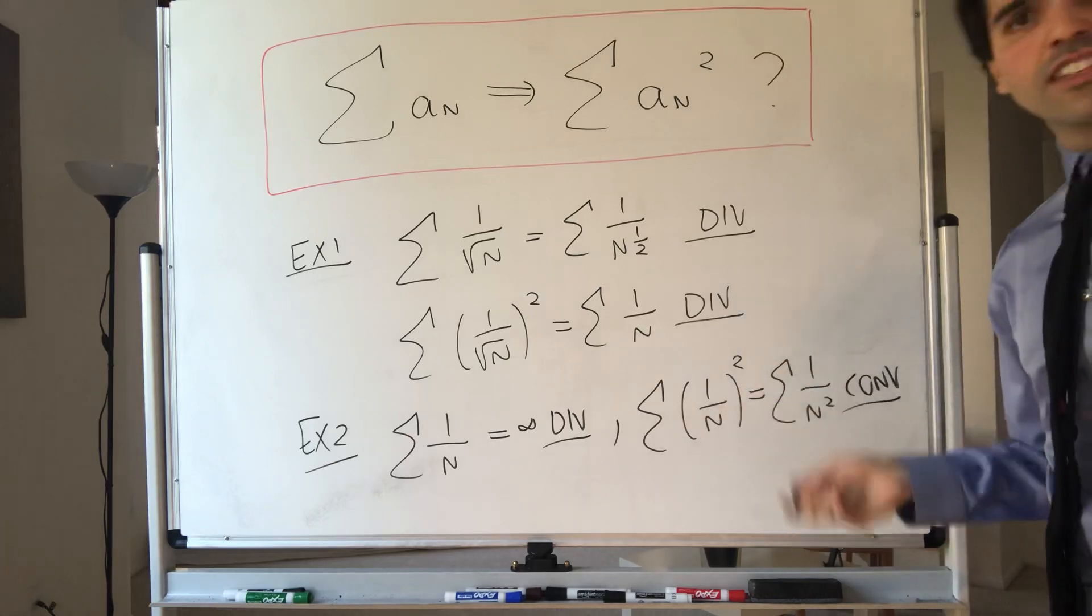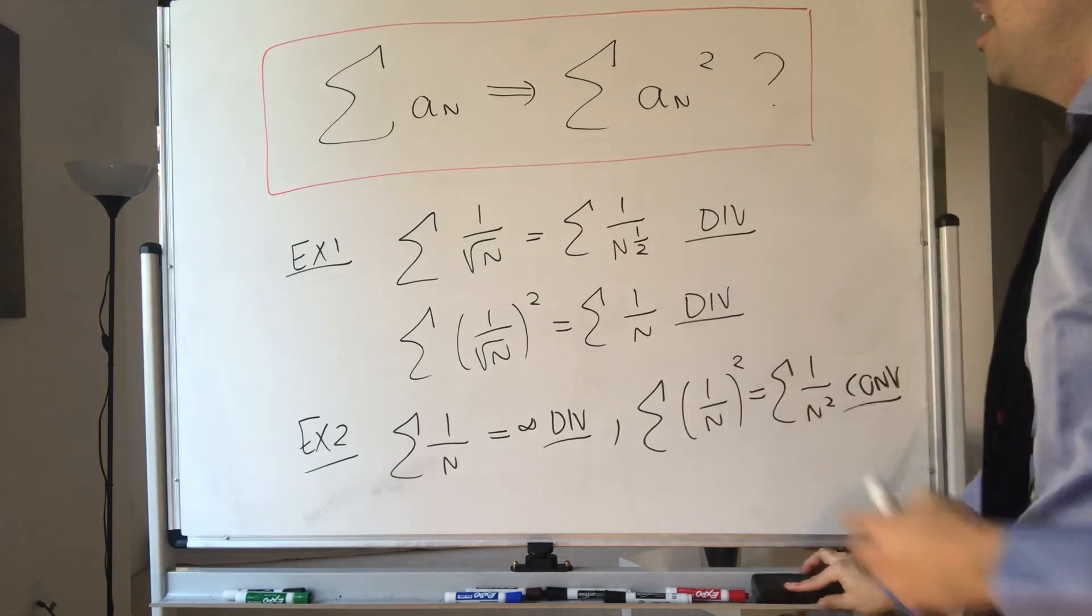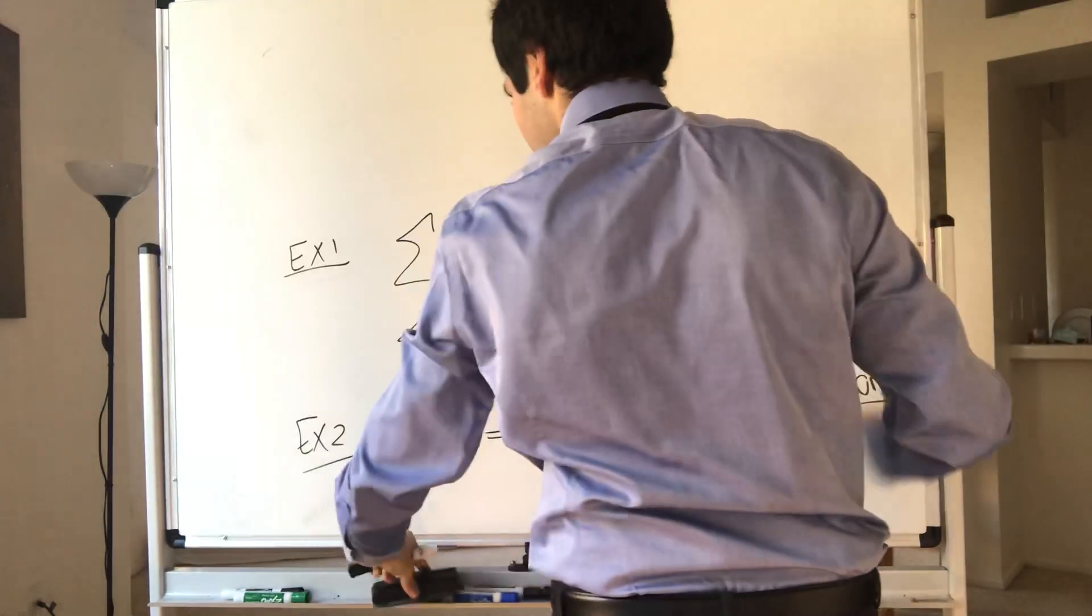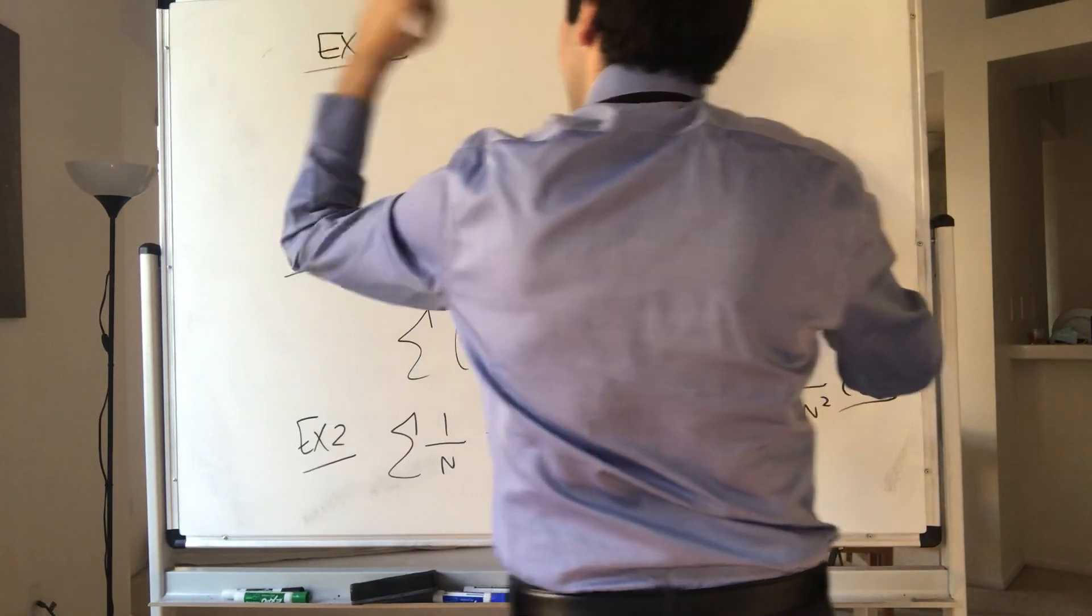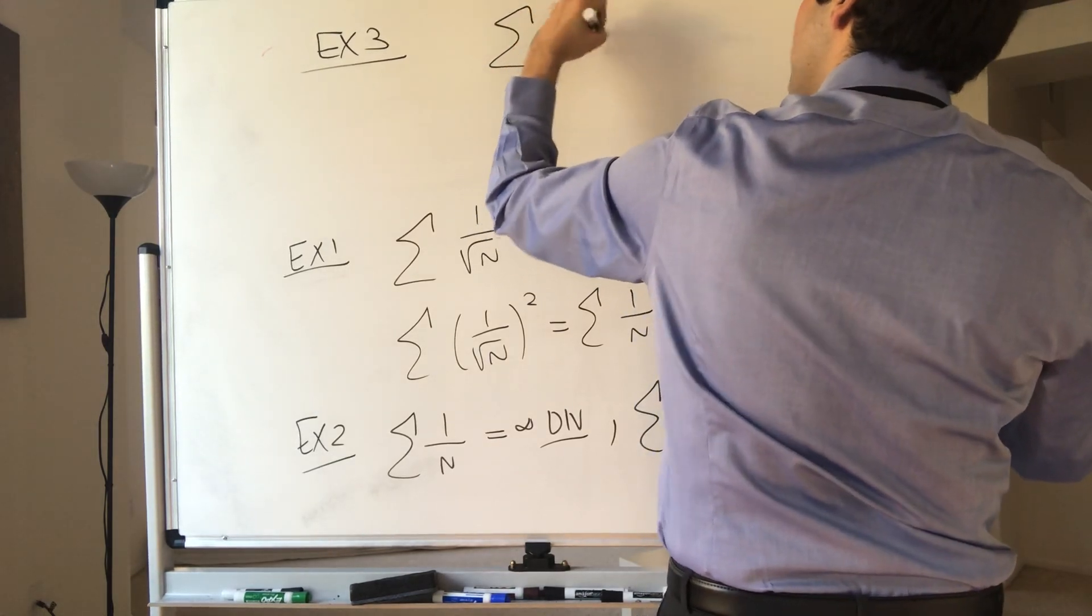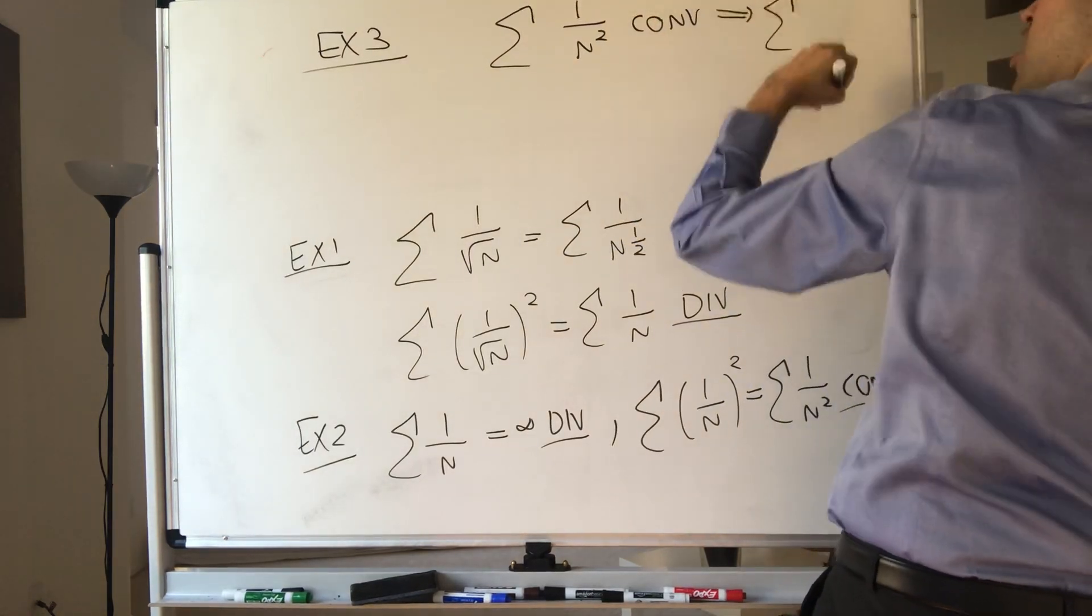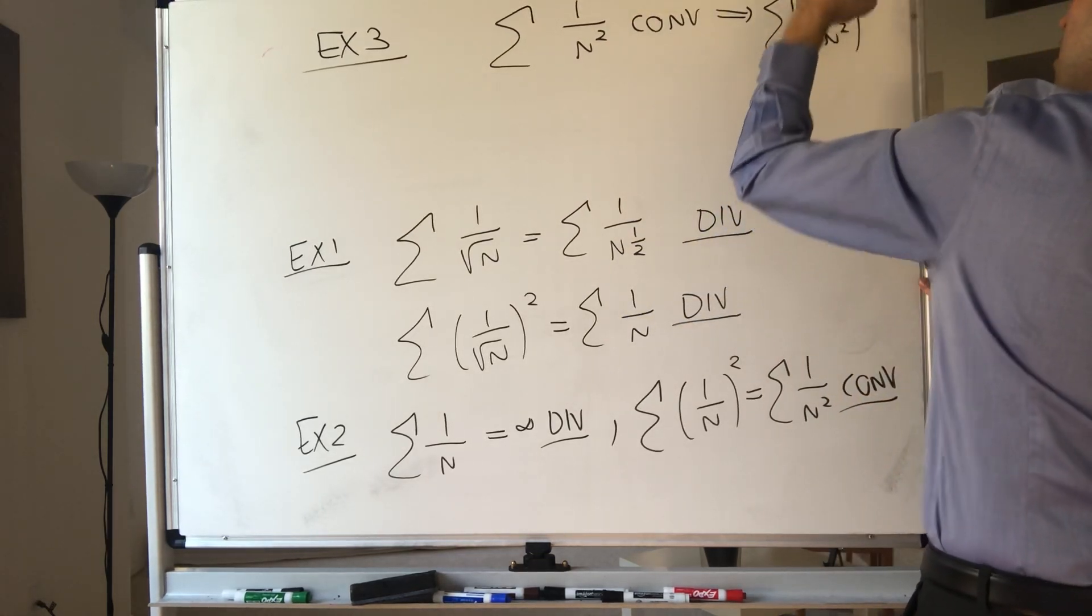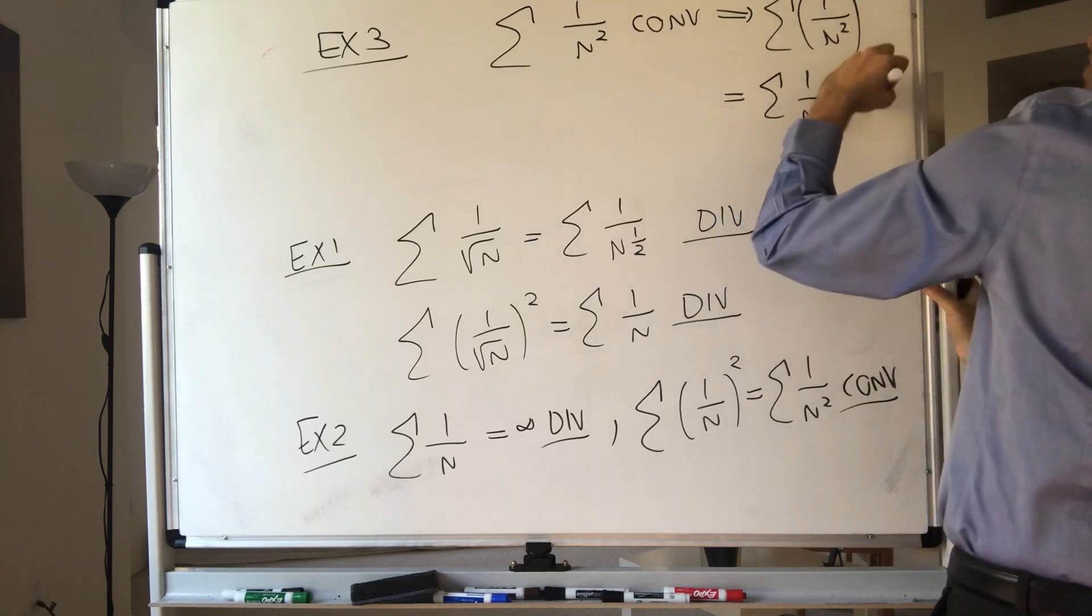So in general, divergence doesn't imply anything, but even convergence doesn't imply anything. Because for instance, you could have the series converging and the square converging. So for instance, the sum of one over n squared converges, therefore the sum of one over n squared squared, which is the sum of one over n to the fourth, converges.